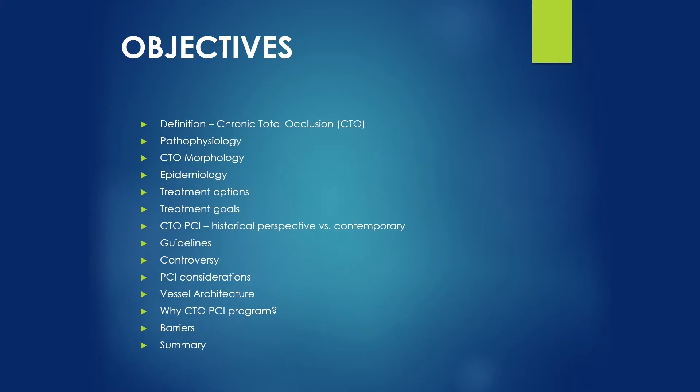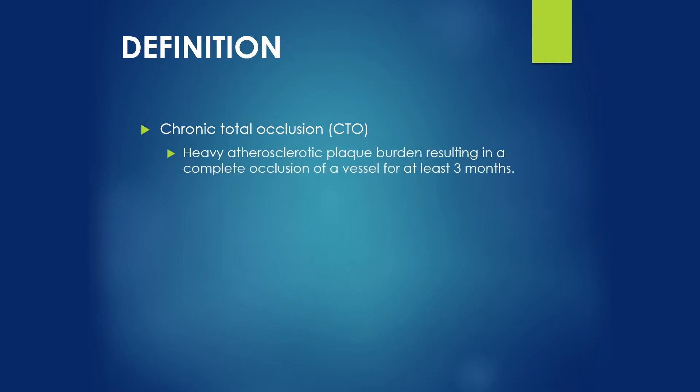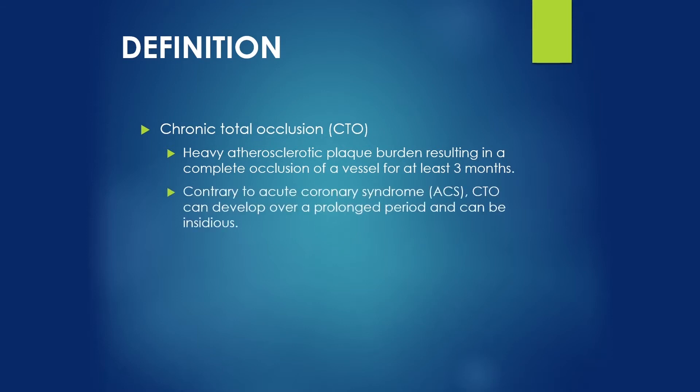So, definition: chronic total occlusion is a heavy atherosclerotic plaque burden resulting in a complete occlusion of a vessel for at least three months. Contrary to acute coronary syndrome, CTO can develop over a prolonged period and can be insidious.